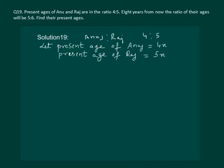Next line reads that 8 years from now the ratio of their ages will be 5 is to 6. So firstly let us find out what happens 8 years later.